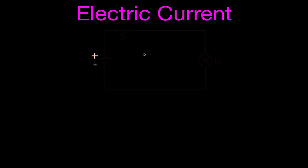Let's talk more specifically about electric current and the direction that the current is actually flowing. Here again is a simple circuit with a voltage source, a switch, and a resistor which is the light bulb. The voltage source has a long line on one side — that's the positive end — and a short line, which is the negative terminal. When we talk about the direction of current, we can talk about it in two different ways: electron flow and conventional current.